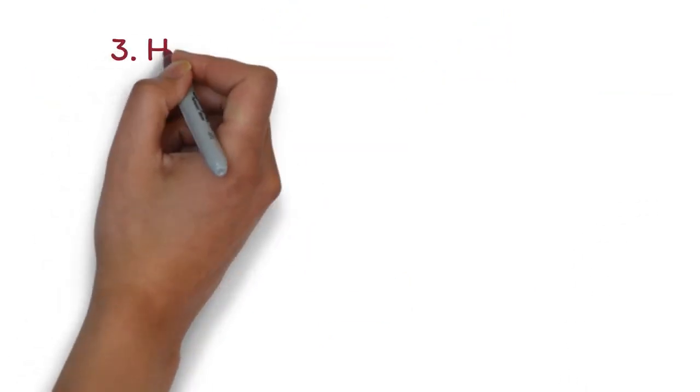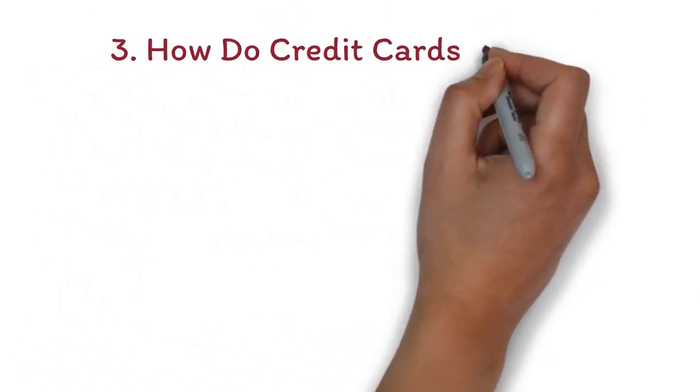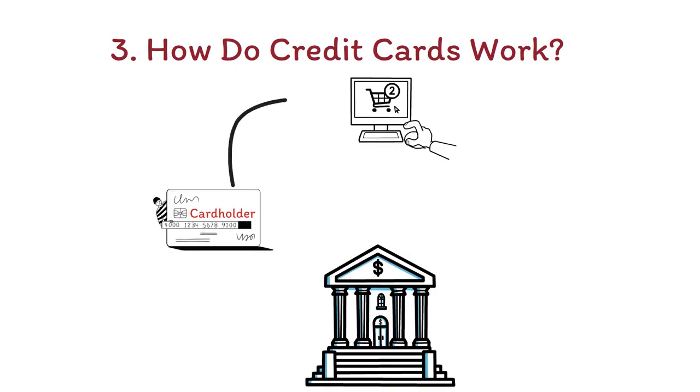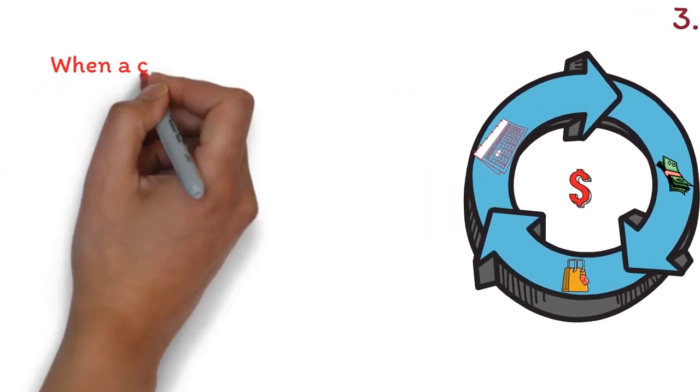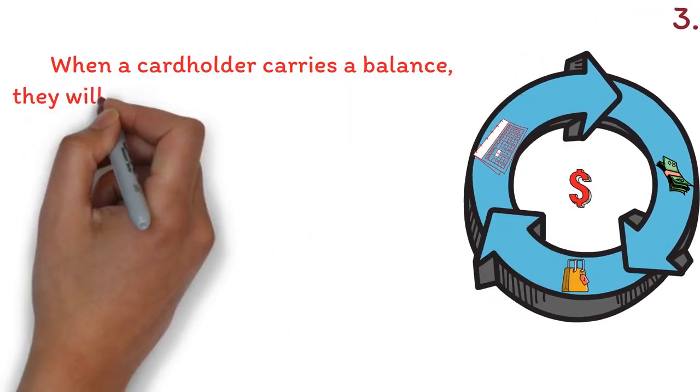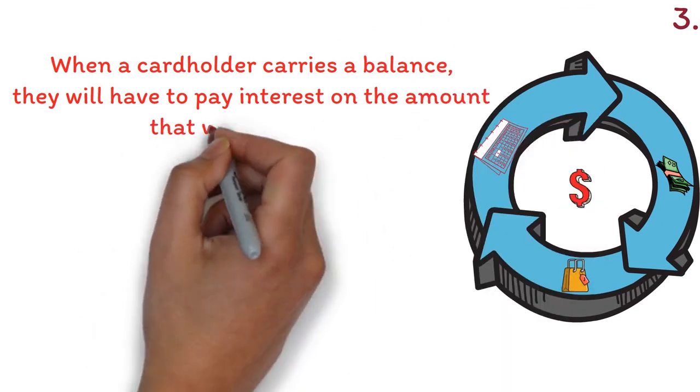Number three, how do credit cards work. When a card holder purchases something with a credit card, the lender pays the merchant and the card holder is responsible for repaying the lender. The card holder can either pay off their balances in full at the end of the billing cycle or carry a balance from month to month. When a card holder carries a balance, they would have to pay interest on the amount that was borrowed.